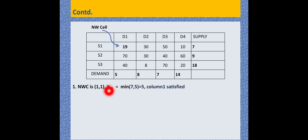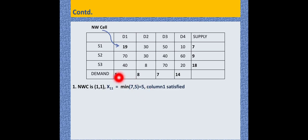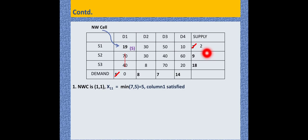The Northwest Corner cell is identified as cell (1,1). We compare the supply and demand: minimum of 7 and 5. Since demand (5) is less, we allocate 5 at that cell. Because the demand is satisfied, we strike off that column. The remaining supply is 7 minus 5, which equals 2, and this is updated for the next step.